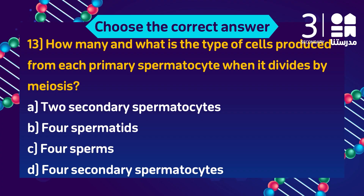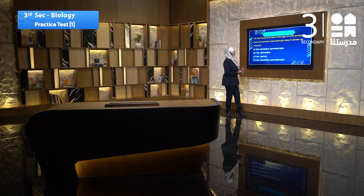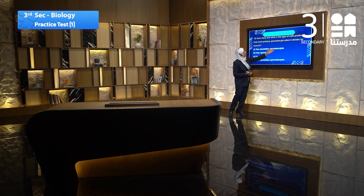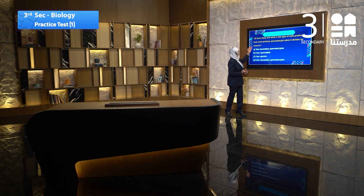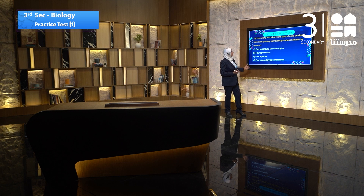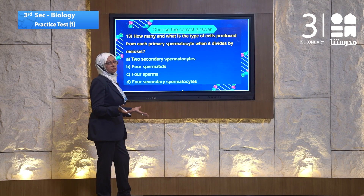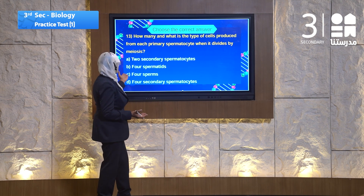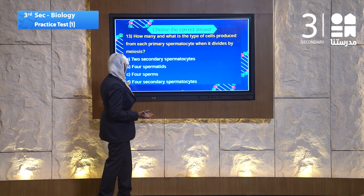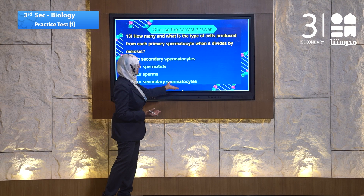Question 13: How many and what type of cells are produced from each primary spermatocyte when it divides by meiosis? The choices are: two secondary spermatocytes, four spermatids, four sperms, or four secondary spermatocytes.